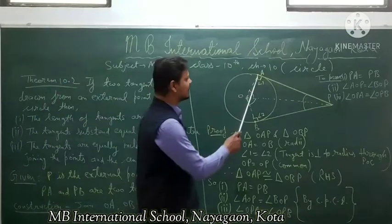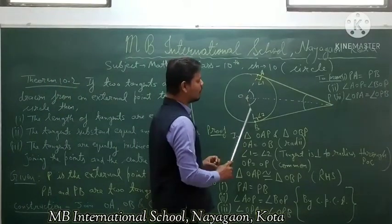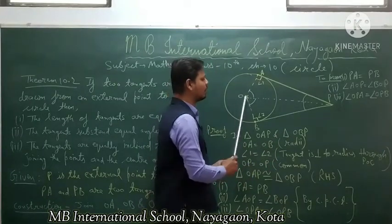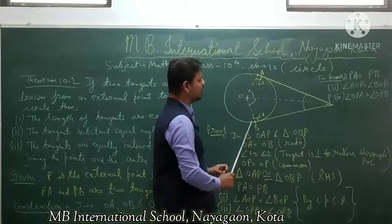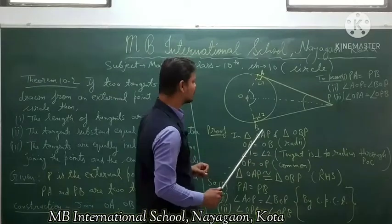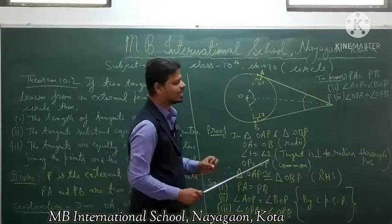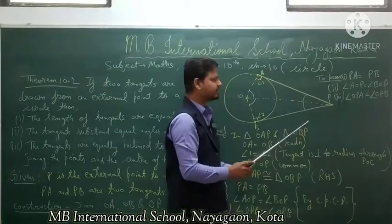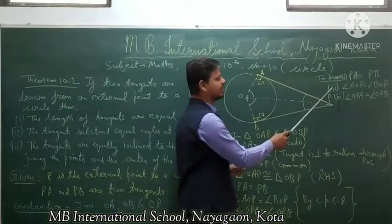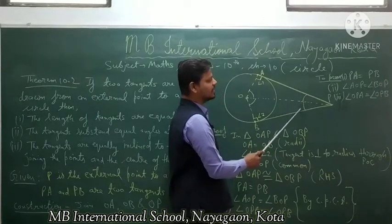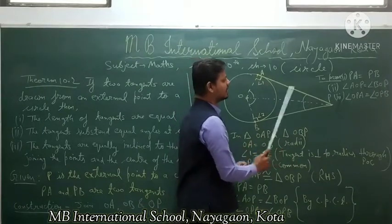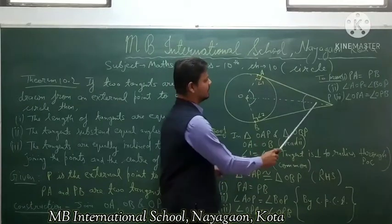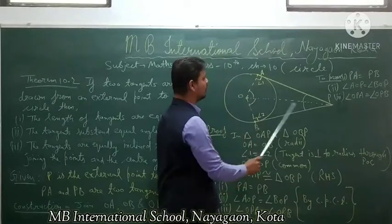Construction: we join OA, OB, and OP — three lines from center O to the points of tangency A and B, and to the external point P.